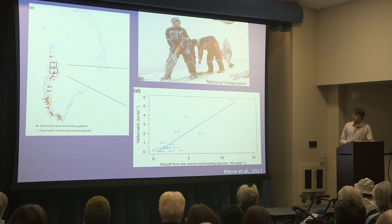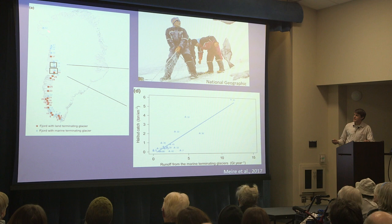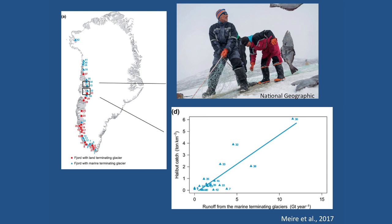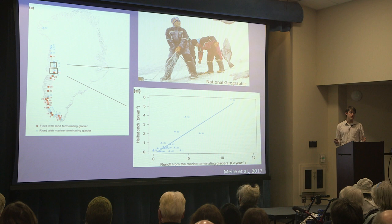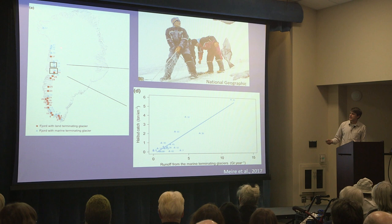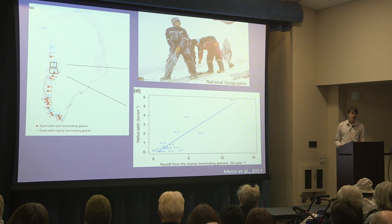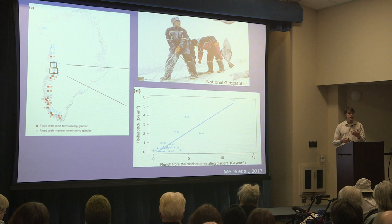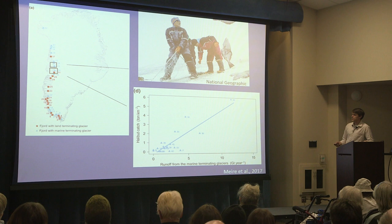An interesting study done recently in Greenland looked at 42 fjords in western Greenland — blue fjords have tidewater glaciers, red ones have land-terminating glaciers. Halibut fishing is the primary economic engine of the fishing industry in Greenland. They found a correlation between the amount of runoff from marine-terminating tidewater glaciers and the halibut catch, but no correlation for runoff from land-terminating glaciers. The average catch per square kilometer for fjords with tidewater glaciers was eight times as high as those with land-terminating glaciers — likely due to the upwelling and increased productivity associated with tidewater glaciers.